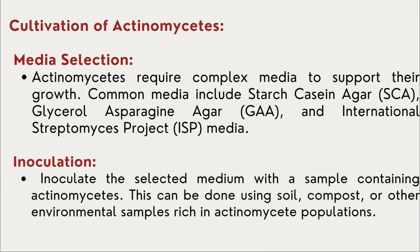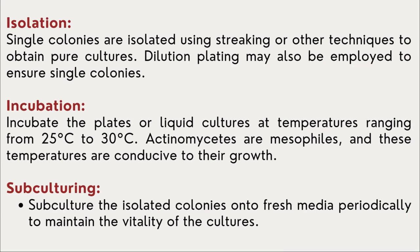For inoculation, the actively growing actinomycetes are inoculated into the media. If you are planning to isolate actinomycetes from a soil sample, then you follow the serial dilution process. The serially diluted sample is plated onto starch casein agar or ISP media, which supports the growth of actinomycetes. Single colonies are isolated by streaking or other techniques as discussed in previous classes. The incubation temperature — even actinomycetes prefer growing at room temperature; the majority of actinomycetes love to grow at room temperature.